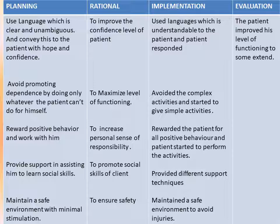The sixth planning step is to reward positive behavior and work with the patient. Mental health patients need extra support, so rewarding positive behavior increases their personal sense of responsibility. Note what kind of reward was given in the implementation column. The seventh step is to provide support in assisting the patient to learn social skills. Support techniques depend on the patient's condition — for example, drawing, small activities like cleaning a room, or making the patient a group leader and asking them to report things at a specific time — whatever improves social skills.